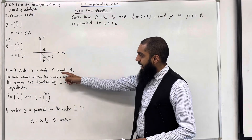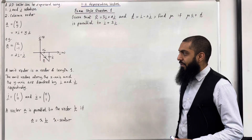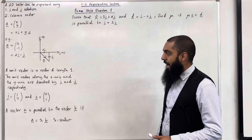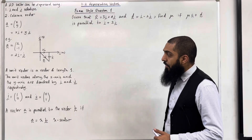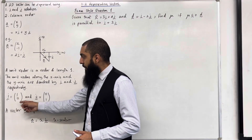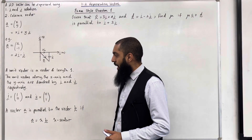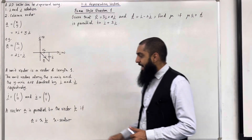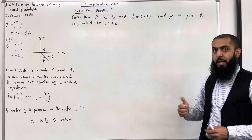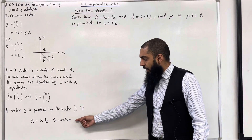A unit vector is a vector of length 1. The unit vectors along the x-axis and the y-axis are denoted by i and j respectively. So the vector i is represented in column vector form as (1, 0), and the vector j is represented in column vector form as (0, 1). A vector a is parallel to vector b if a equals lambda times b — in other words, if a is a scalar multiple of b, where lambda is your scalar, a fixed number.